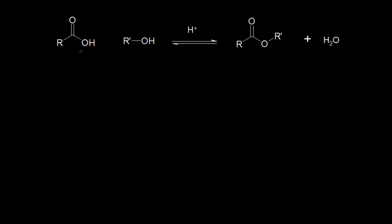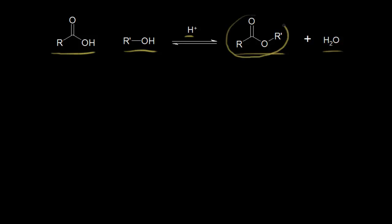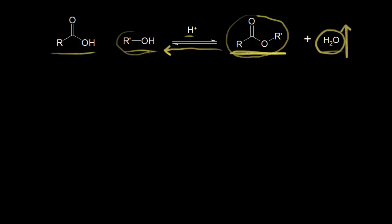In the video on Fischer esterification, we saw that if we took a carboxylic acid and an alcohol in an acid-catalyzed reaction, we produced an ester and we also produced water. Our goal in that video was to make more of our ester, so we shifted the equilibrium to the right. In this video, we're talking about the reverse reaction — ester hydrolysis. If we increase the concentration of water, that shifts the equilibrium back to the left, hydrolyzing our ester into our alcohol and our carboxylic acid.